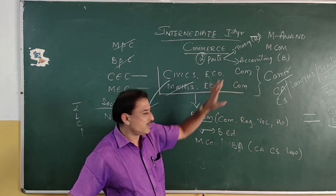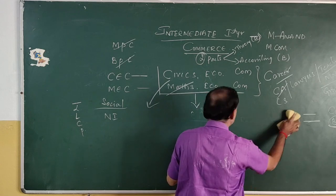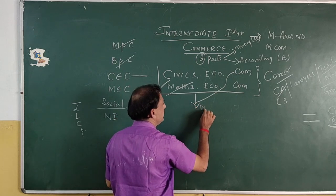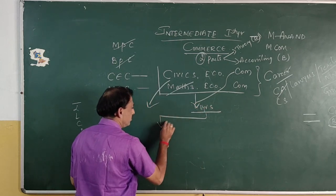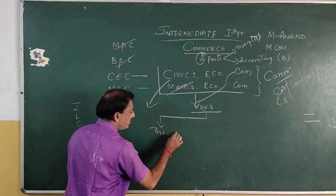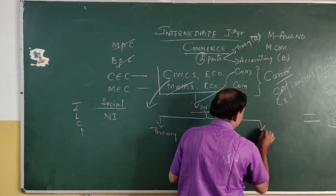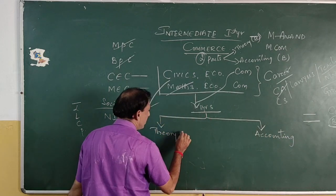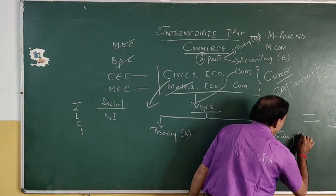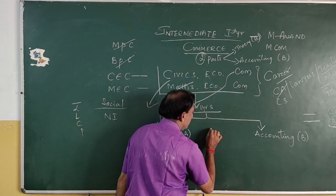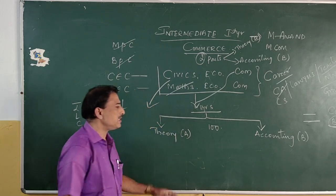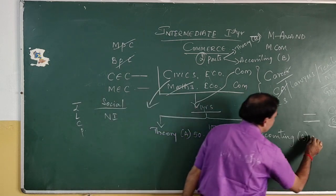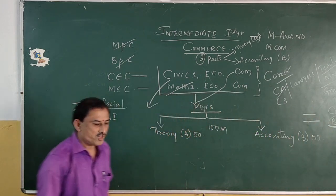Now our Commerce part: in the first year we are going to study theory and accounting — Part A and Part B. The total marks in the annual exam: 50 marks are allocated for theory and 50 marks are given for accounting.